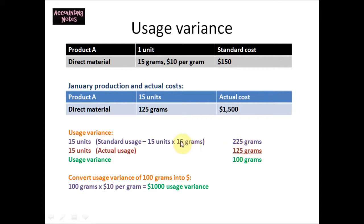This means the company should have used 225 grams to produce 50 units. But instead, the company produced 50 units using only 125 grams. This means the company actually used less grams than they should have used. Therefore, the difference between 225 and 125 is 100 grams, so the usage variance is 100 grams.